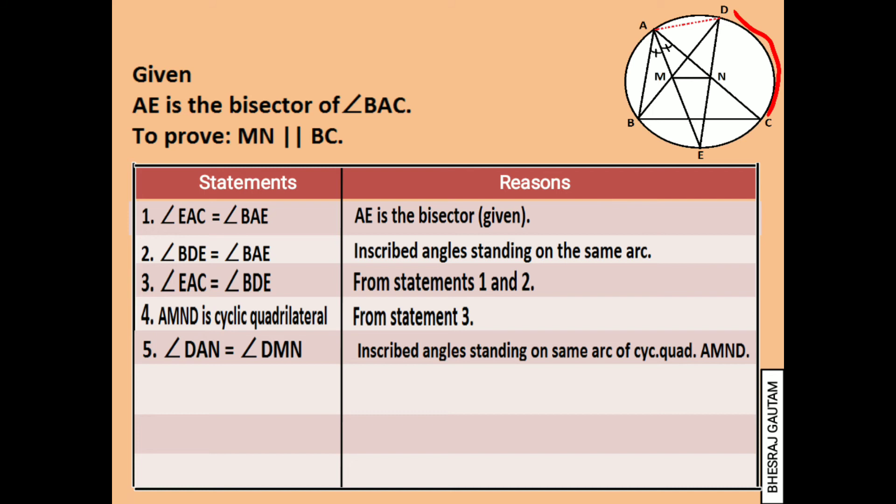Also the arc DC forms two different angles on the circumference which are angle DAC and angle DBC. So they can be written equal as angle DAC is equal to angle DBC. Since angle DAN is same as angle DBC, we can also write angle DAN is equal to angle MBC in statement 6.